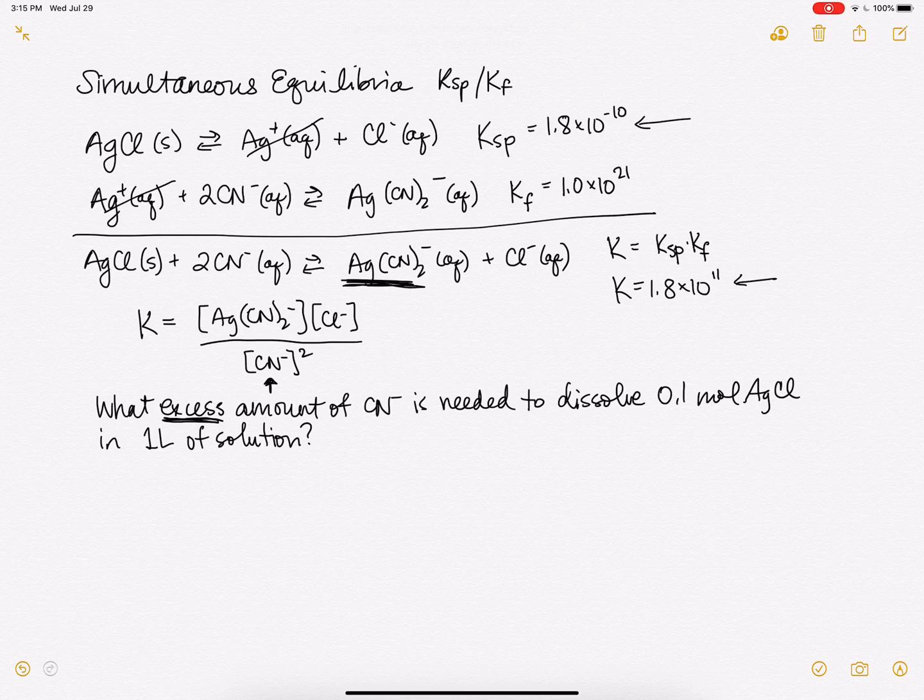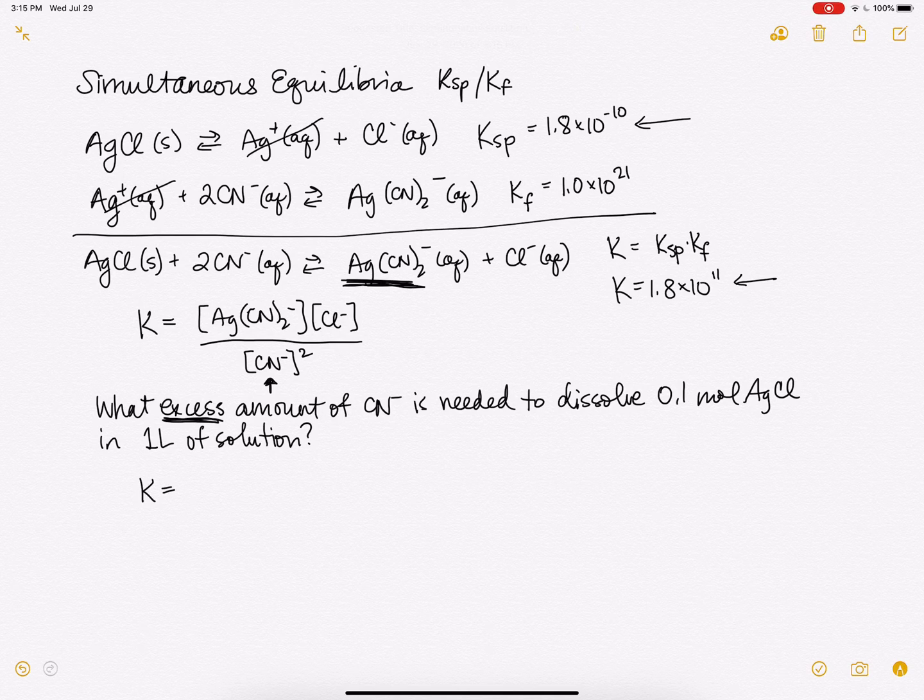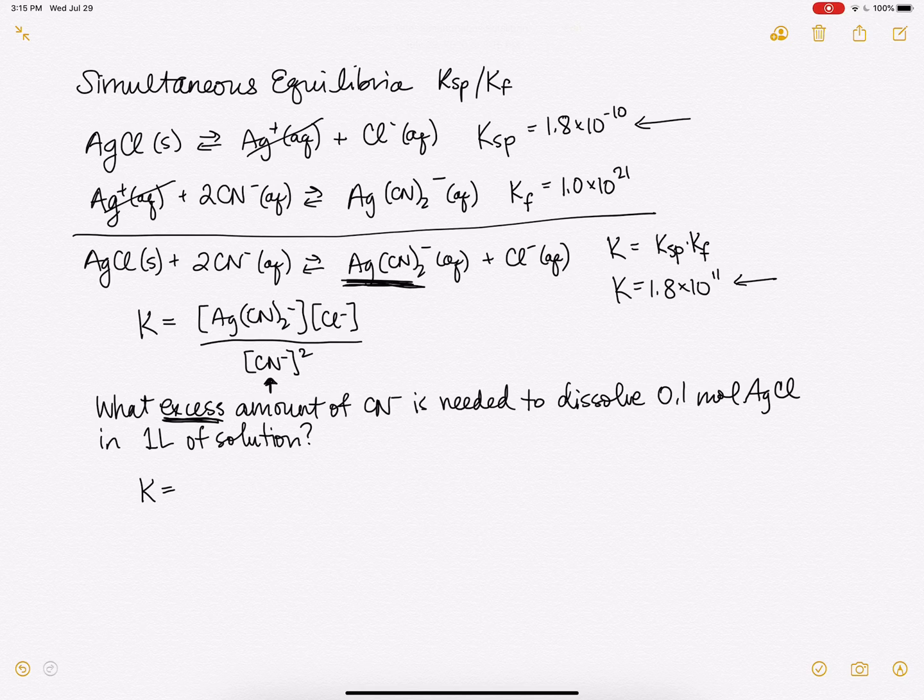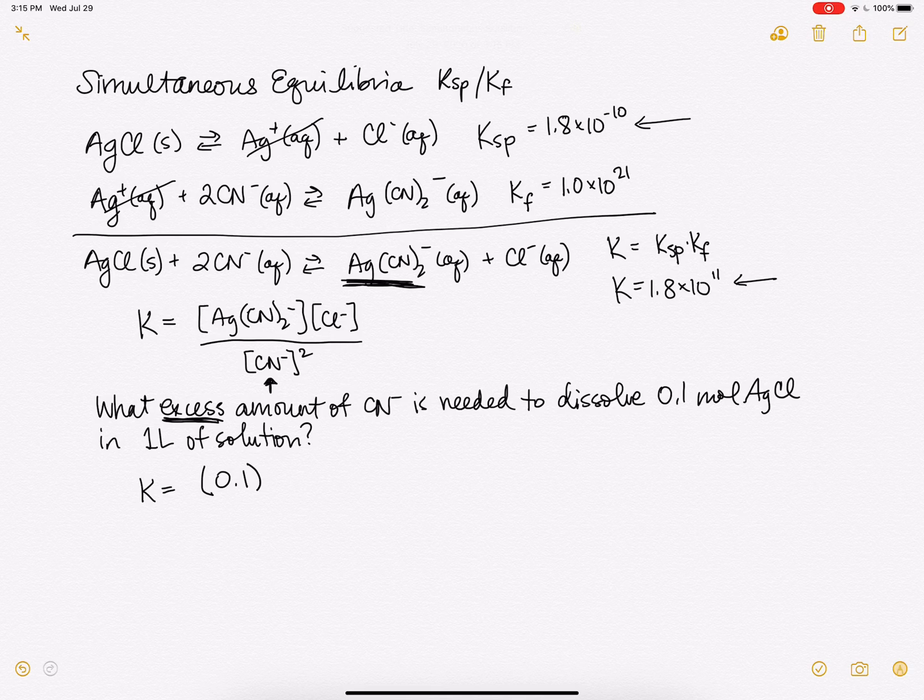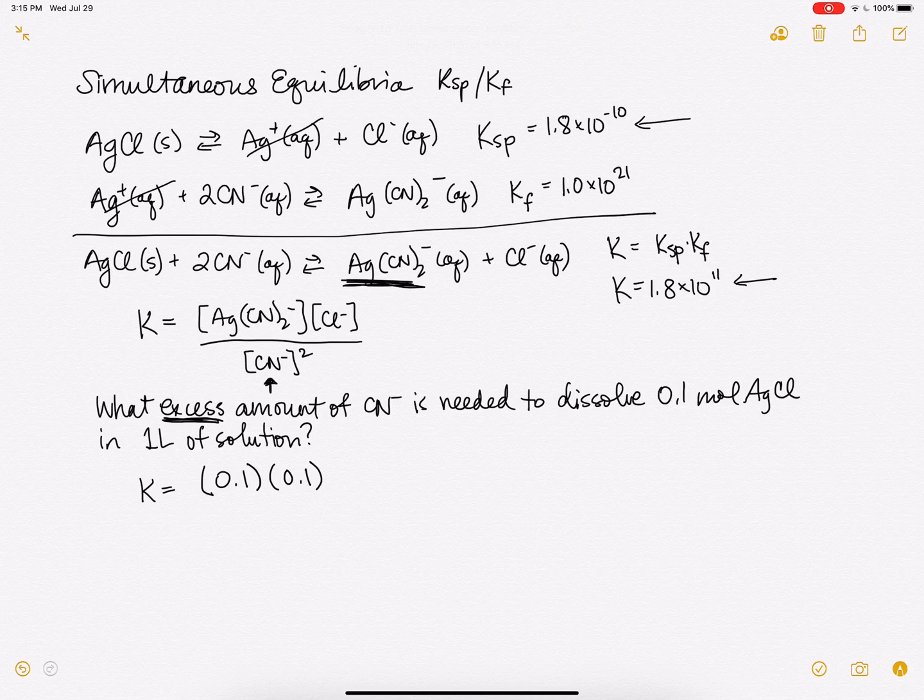The reason this matters is because of course again, cyanide is poisonous, so we want to use the smallest amount possible. So in this case, we would have for our silver di-cyano silver ions, it would be 0.1. That would be our concentration. And for our chloride ions it would be 0.1, and then we would have our concentration of cyanide squared.